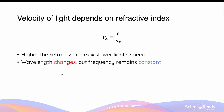Recall that for any wave, the velocity is given by the product of the frequency and its wavelength. Since the velocity changes, the wavelength of the wave also changes. So if the velocity decreases, the wavelength of the light in the new medium will also be shorter. It is important to keep in mind that the frequency in refraction always remains constant — only the wavelength changes with the velocity.